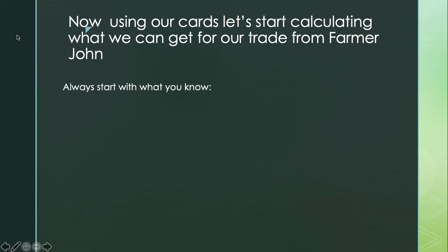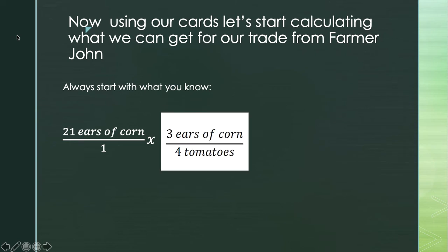We want to trade 21 ears of corn for some tomatoes. We always start with what we know: I have 21 ears of corn, and to keep everything in fraction form, I'm going to write 21 ears of corn over 1. We multiply that by a conversion factor to exchange ears of corn for tomatoes. However, if I place a card that has ears of corn in the numerator of the conversion factor, ears of corn is on top in both fractions, so I cannot cancel it. In order to cancel the unit ears of corn, it has to be on the top in one fraction and on the bottom in the other.